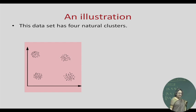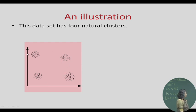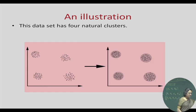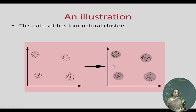In order to talk about clustering algorithms, let us look at some example data. These are data points — only the data points are given, their labels are not given — but in this particular data you can see visually that there are 4 natural clusters. What a clustering algorithm is required to do is take this data and come up with those 4 clusters. Ideally this is what the clustering algorithm will produce.